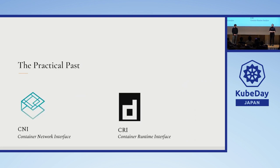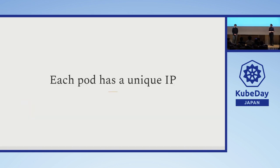This is where we had the CNI and CRI introduced within the landscape — the container network interface and the container runtime interface. We'd like to deep dive a bit more into these interfaces because they're quite important when it comes to the increased adoption of Kubernetes. Now let's focus on networking first.